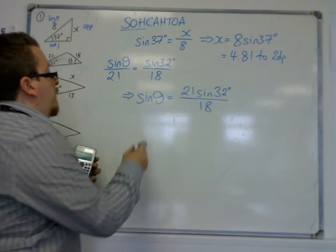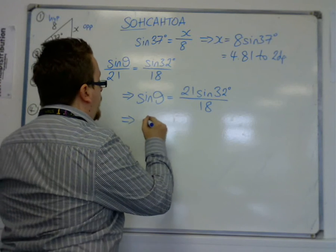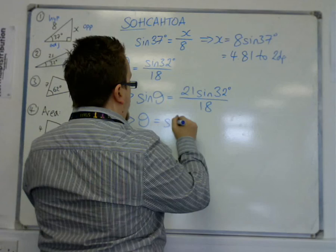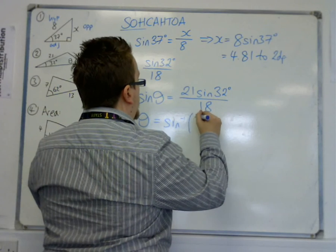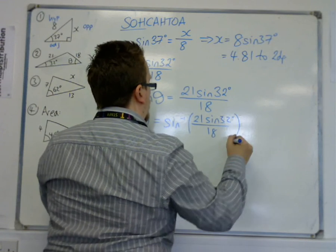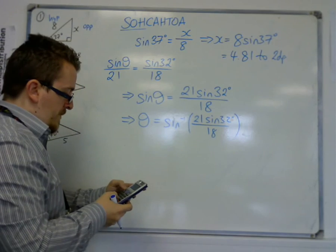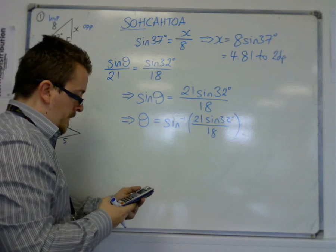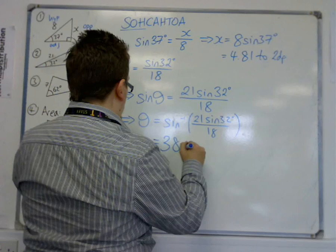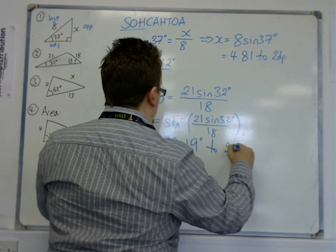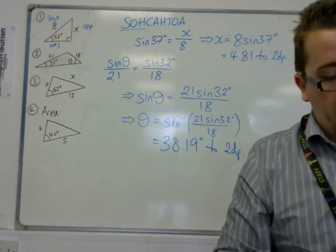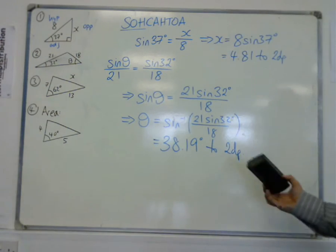Then, if you inverse sine that, so inverse sine or arc sine, inverse sine the answer, you get 38.19 degrees to two decimal places. So that's the angle and that's using the sine rule.